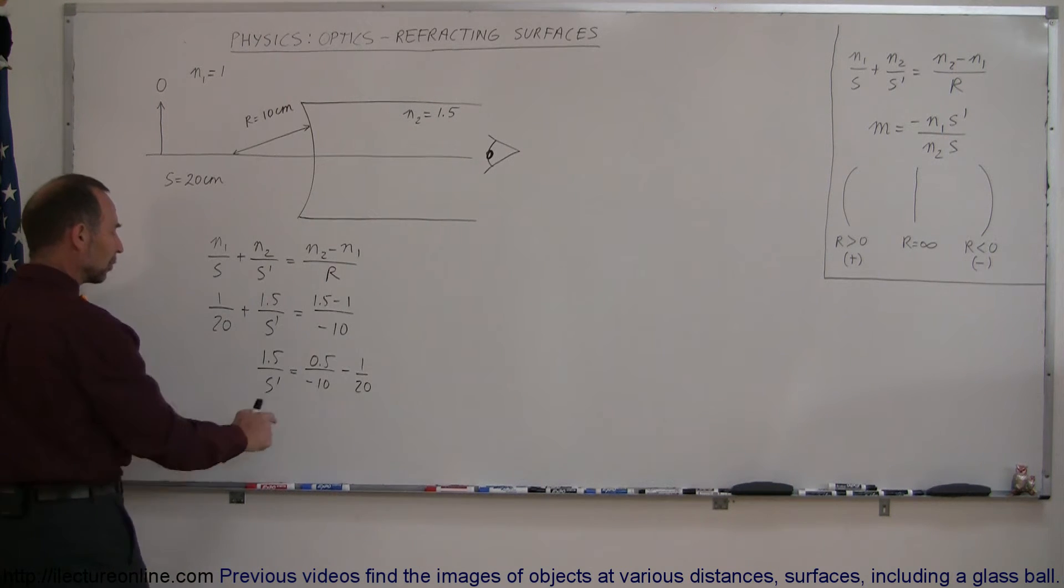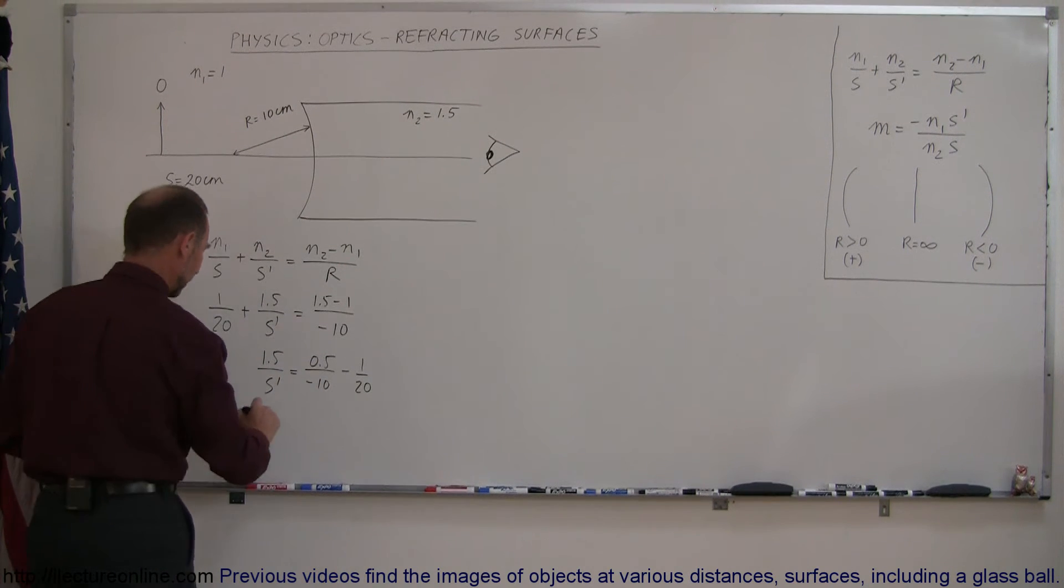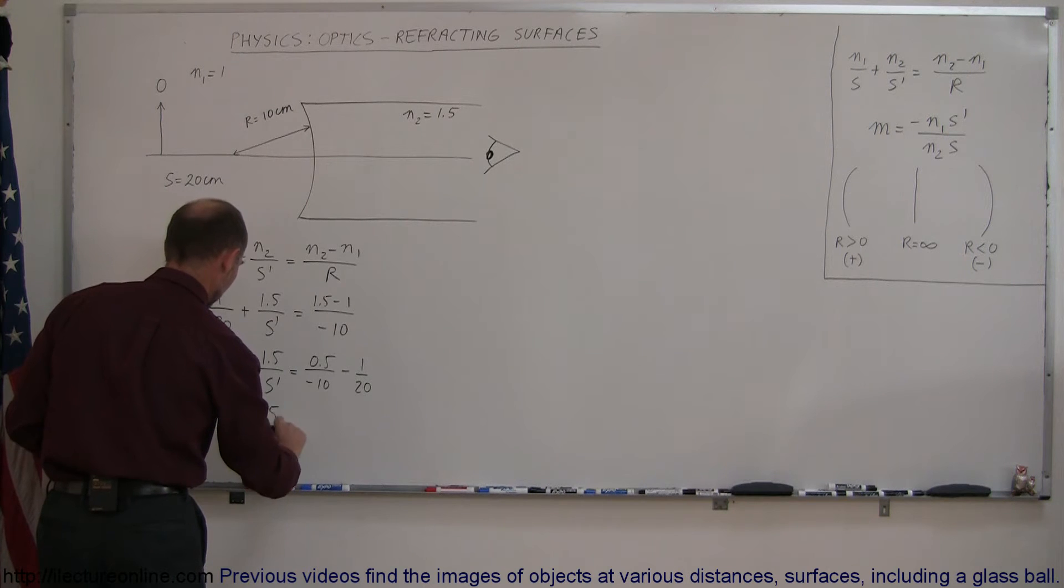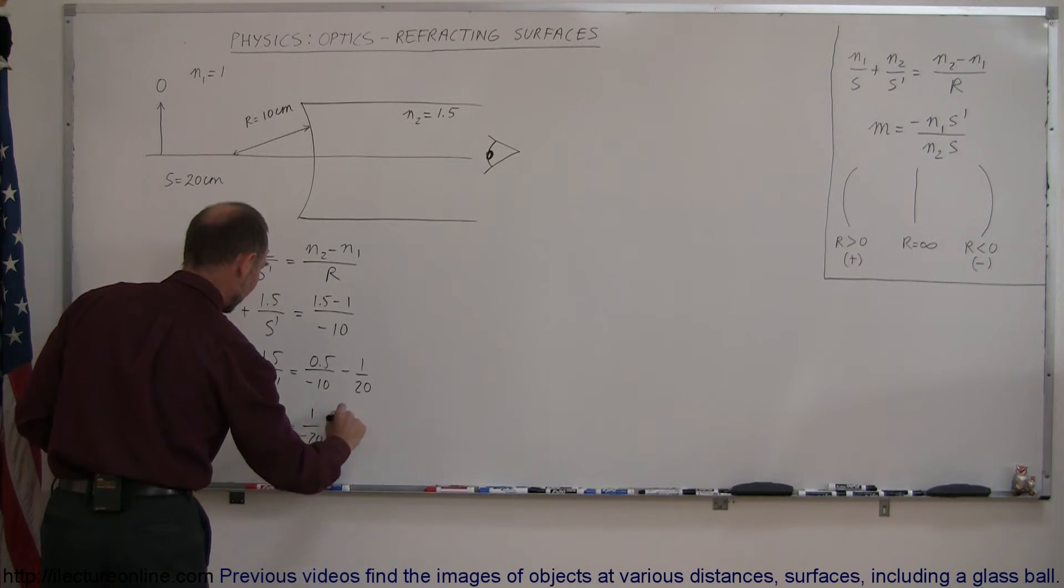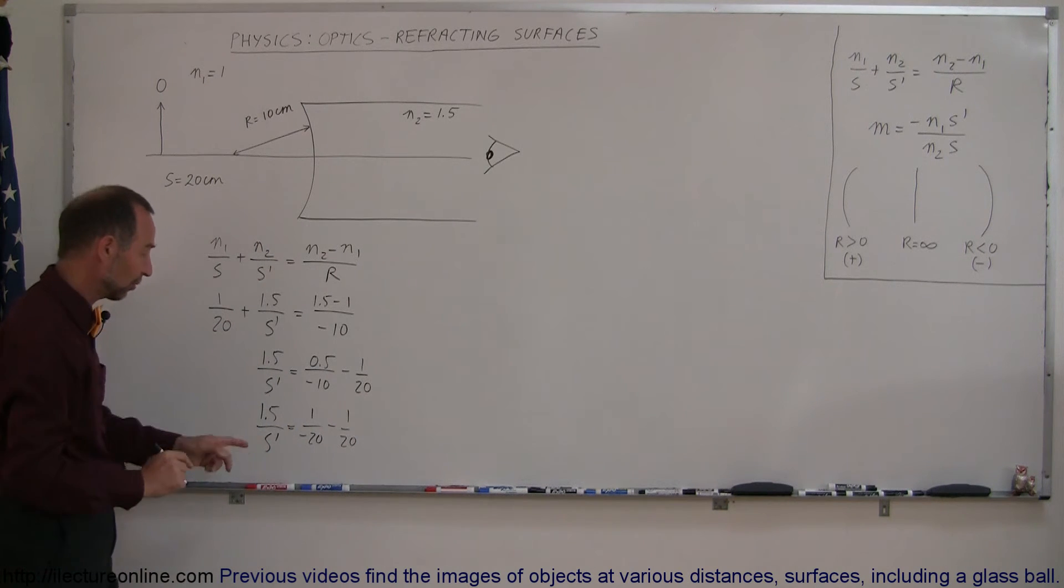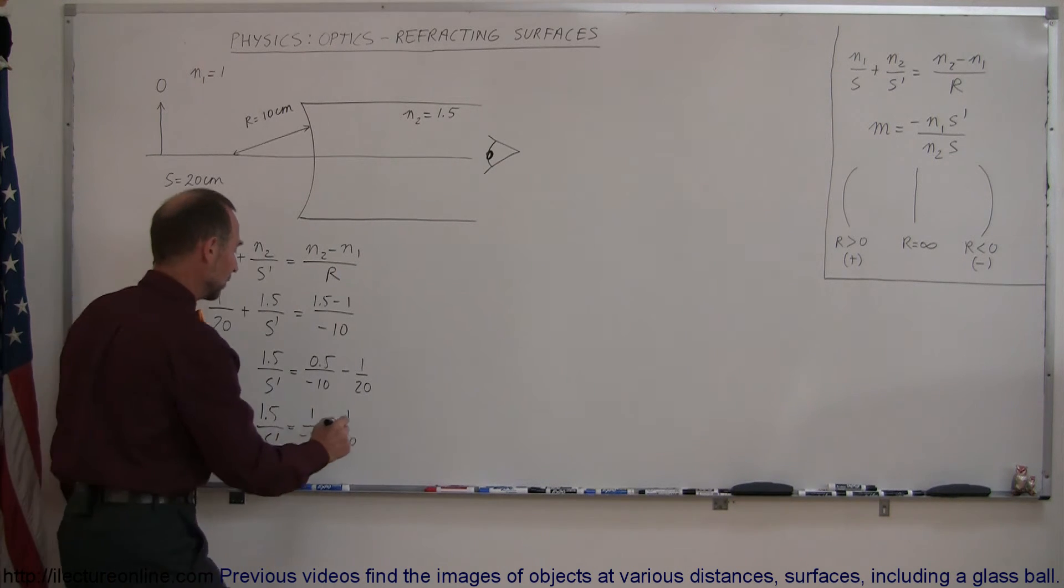I'm going to multiply the top and the bottom here by 2 to get rid of the decimal place. We have 1.5 over S prime is equal to 1 over minus 20, minus 1 over 20. And it doesn't matter where you put the negative sign, that can be simplified.